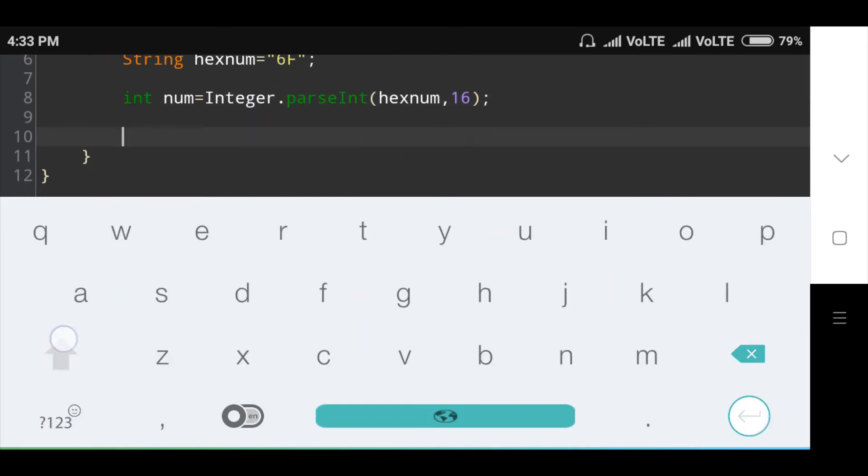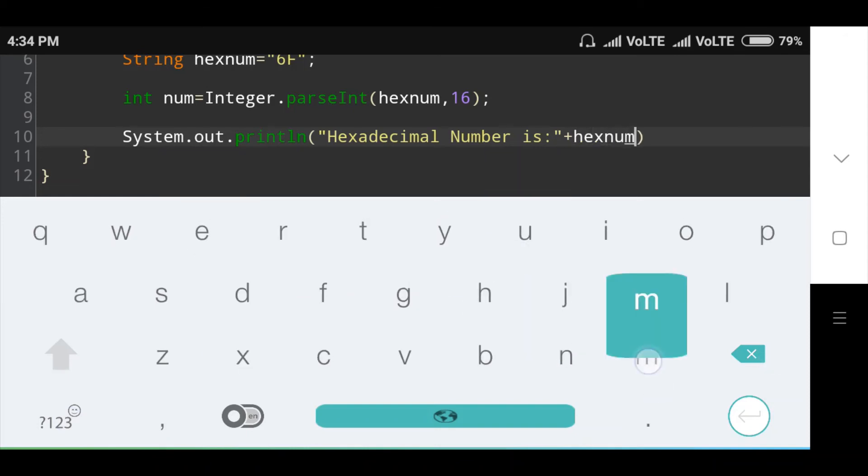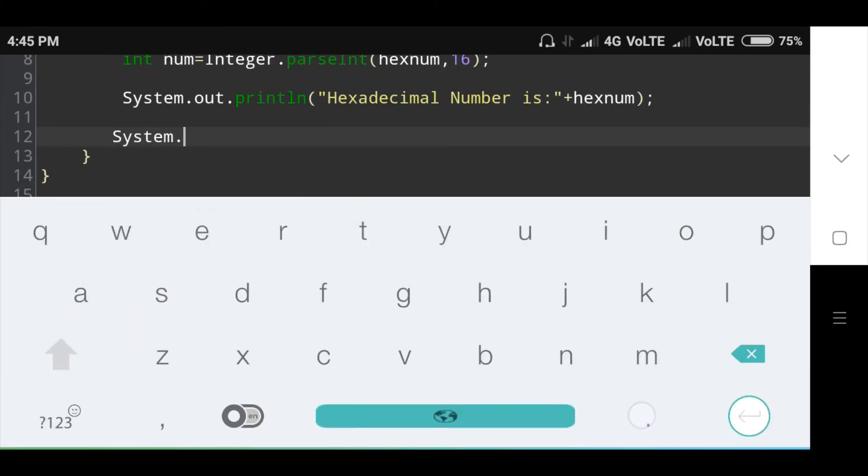Then I am printing message: System.out.println("Hexadecimal number is: " plus hexnum). Here the hexadecimal value is printed.